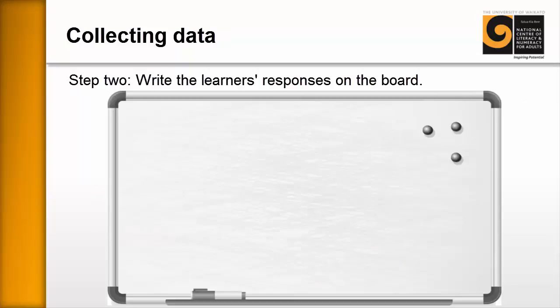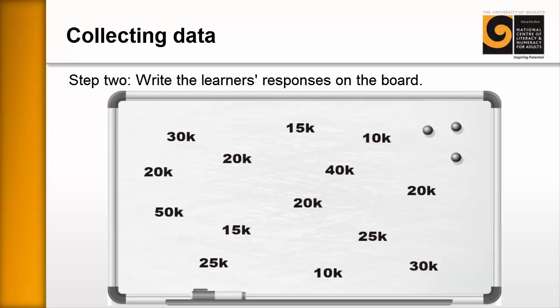In a similar way to Part 1, we're going to ask learners to record how far they run on the board. Some learners will run 50k, some will run 20k, but essentially we're recording all of these amounts on the board. In the end we end up with data.